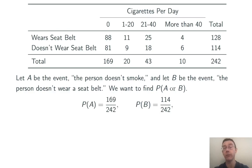So let's compute the individual probabilities. The probability of A that they don't smoke is 169 out of 242. 169 being the total number of people in this sample that don't smoke, that smoke zero cigarettes per day, 242 being the total number of people in the sample.